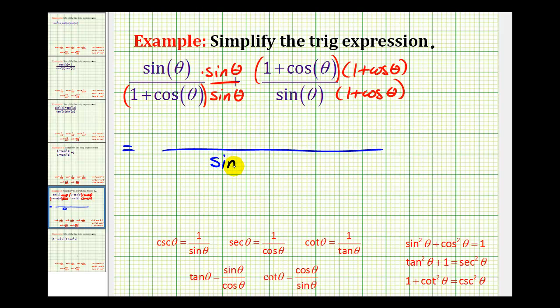The denominator is going to be sine theta times one plus cosine theta and then we have to multiply and then combine the numerators.